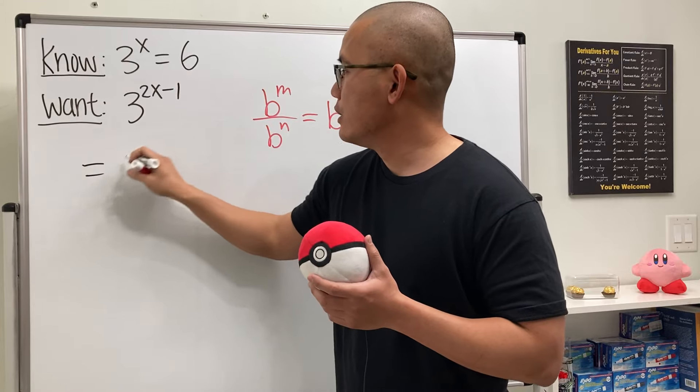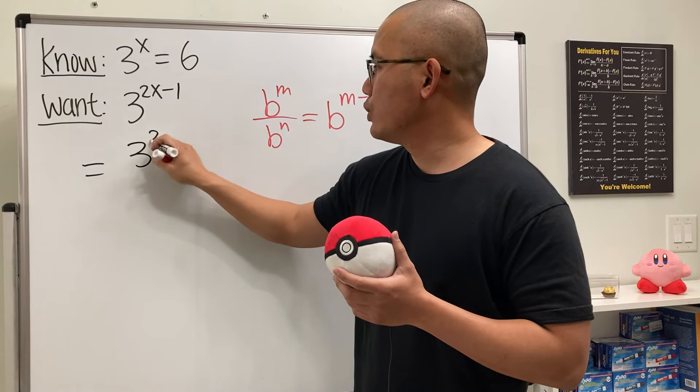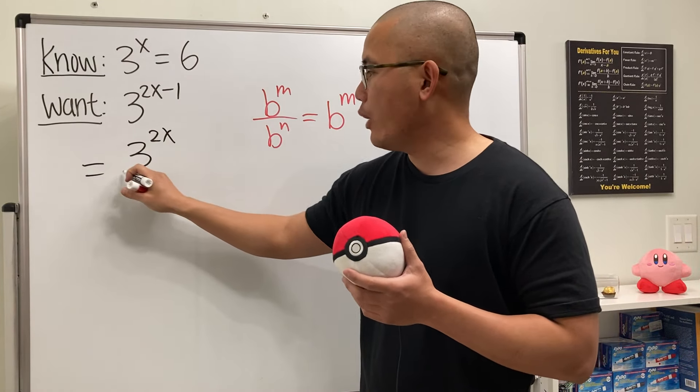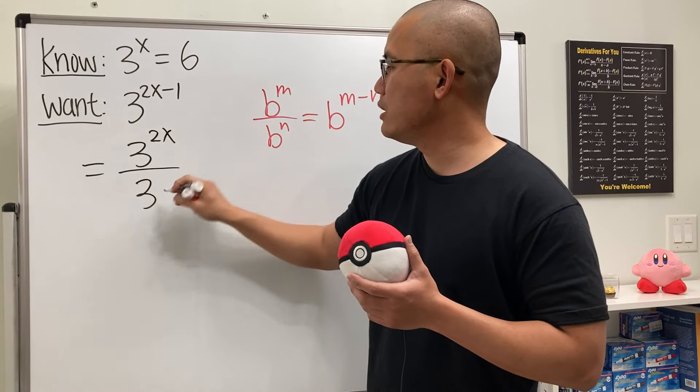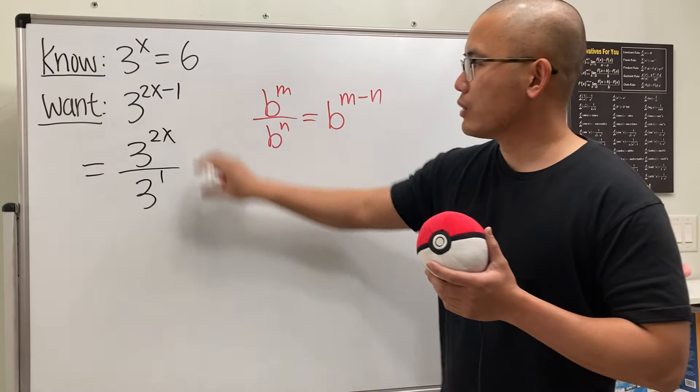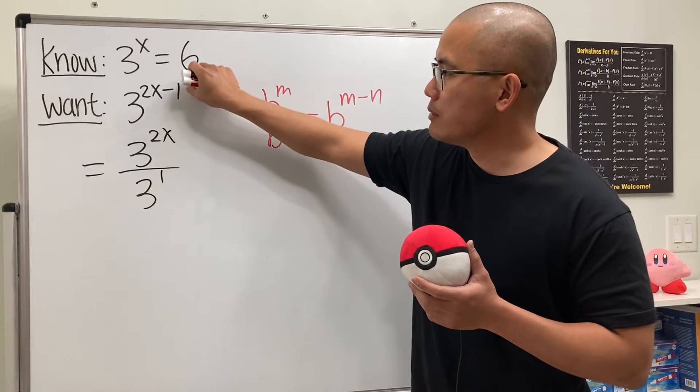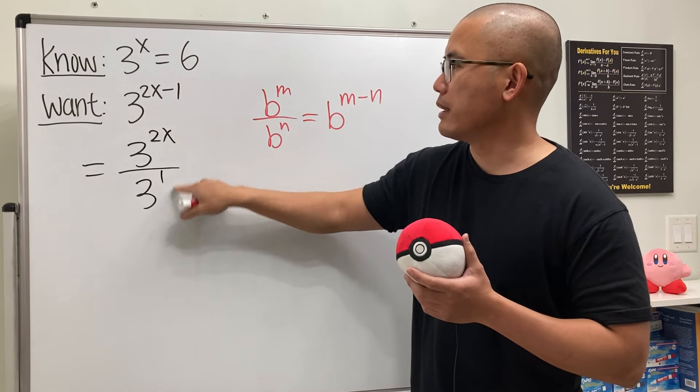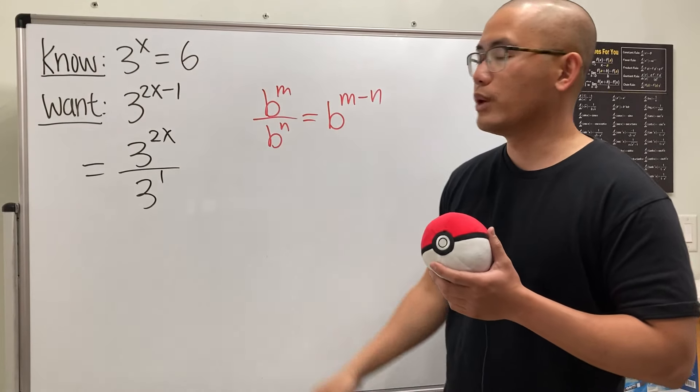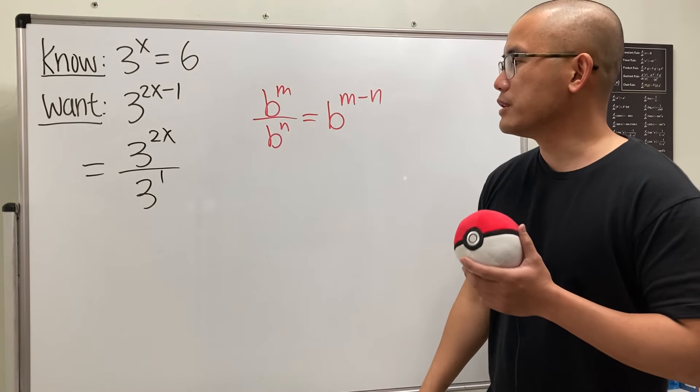we can rewrite this as 3 to the 2x power, and then over 3 to the 1st power. So, you see, if you look at this backwards, it's just 2x minus 1. And of course, you can look at it this way as well. That's what we are using.